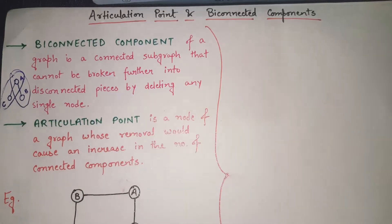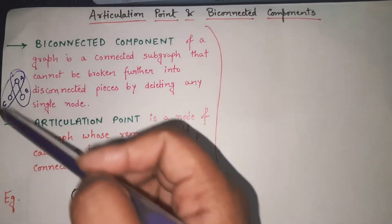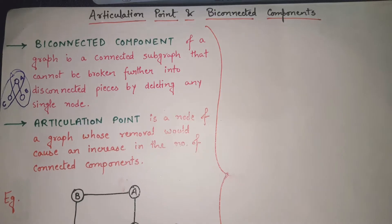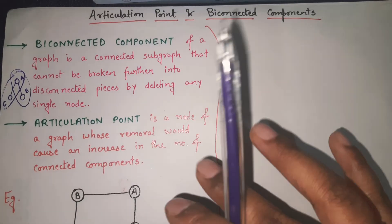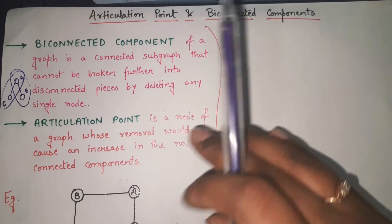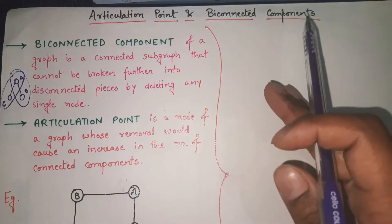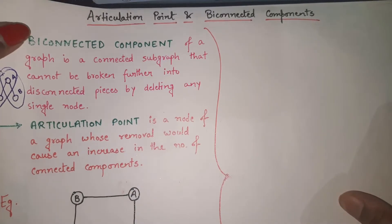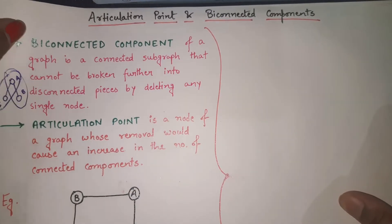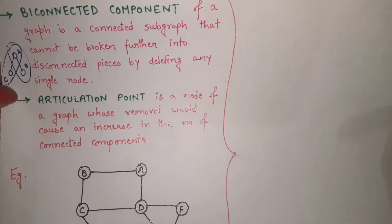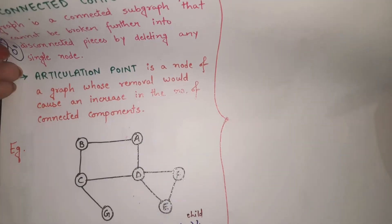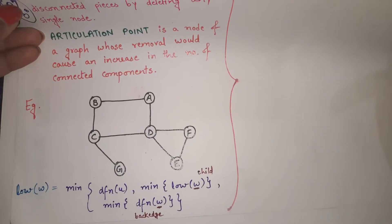I hope with the help of this example both definitions are very clear. Now let us understand how they ask in exams — they will give you a graph and ask you to find out the articulation points and biconnected components of that given graph.